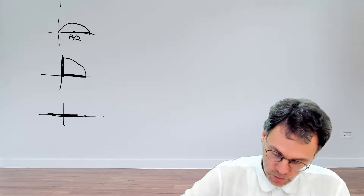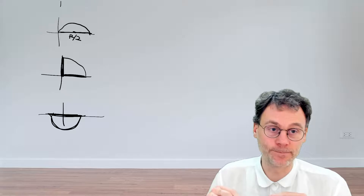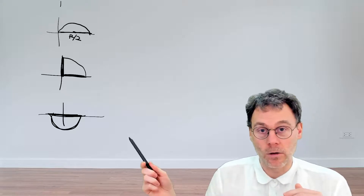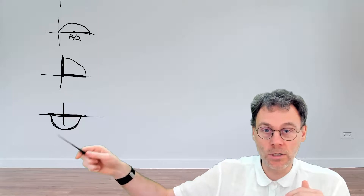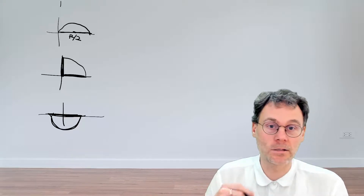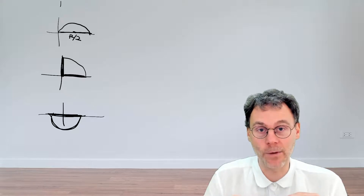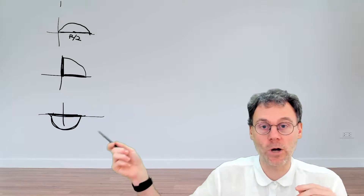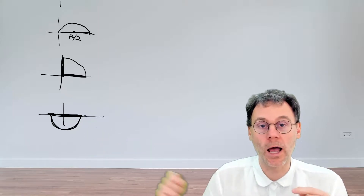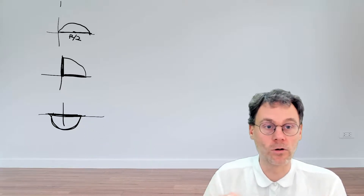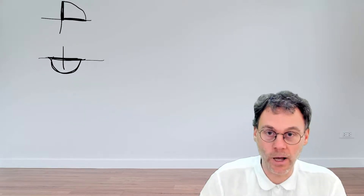What if we close in the lower half-plane? Good news: we have the real axis. Bad news: we close in the wrong half-plane for Jordan's lemma. Jordan's lemma requires us to identify, based on the sign of the exponent, which half-plane to close in — and the lower half-plane is not correct here. So we can't apply Jordan's lemma in this case.